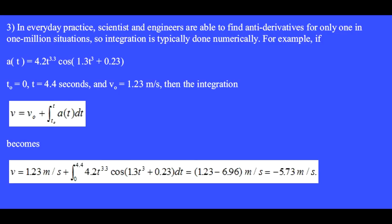In everyday practice, scientists and engineers are able to find antiderivatives for only one in one million situations. So integration is typically done numerically. For example, if the acceleration is a function of time, a(t) equals 4.2t to the 3.3 cosine of 1.3t cubed plus 0.23. If we have t0 equals 0, t equals 4.4 seconds, and the initial velocity v zero equals 1.23 meters per second, then the integration is done numerically and we find that the velocity at 4.4 seconds will be minus 5.73 meters per second.